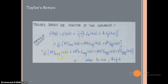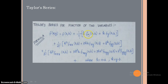For the cube terms, use the (a+b)³ formula: a³ + 3a²b + 3ab² + b³. So h³ gives f_xxx, h²k gives f_xxy (double x, single y), hk² gives f_xyy (single x, double y), and k³ gives f_yyy. The factorial pattern is: first degree uses 1!, second degree uses 2!, third degree uses 3!. These are very important formulas.